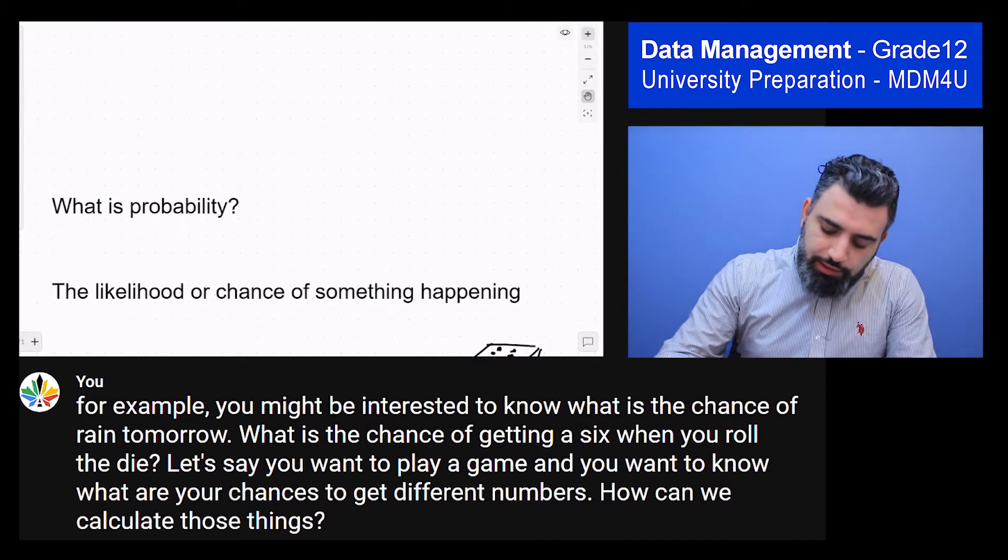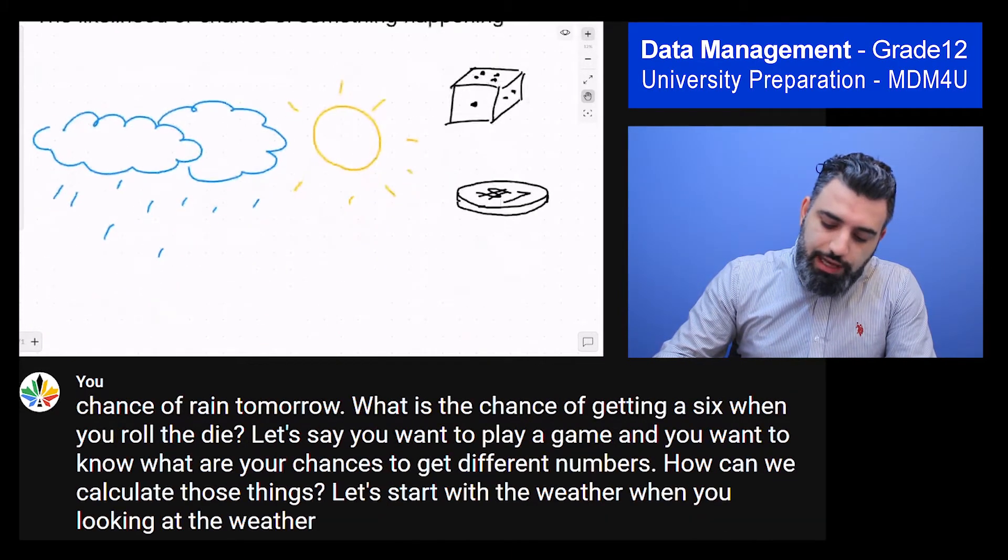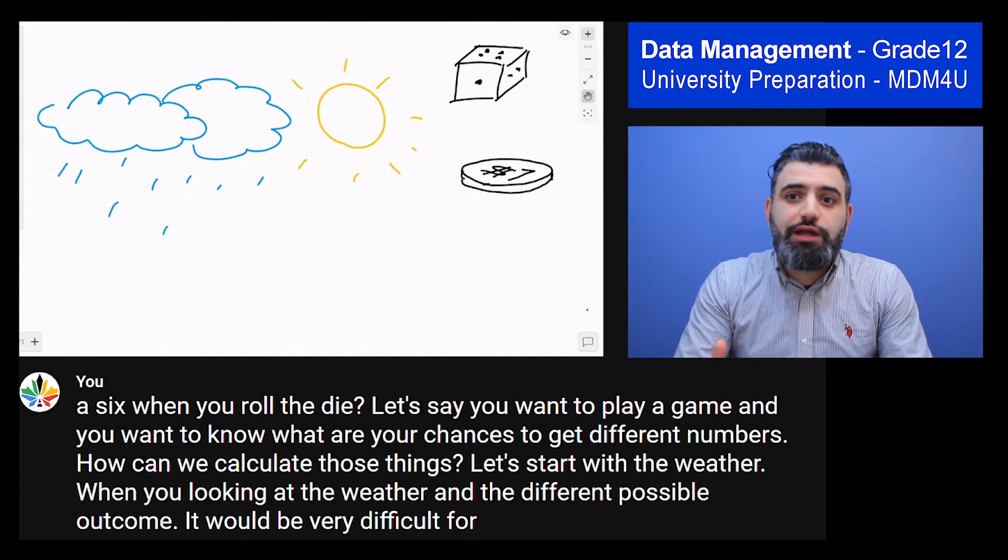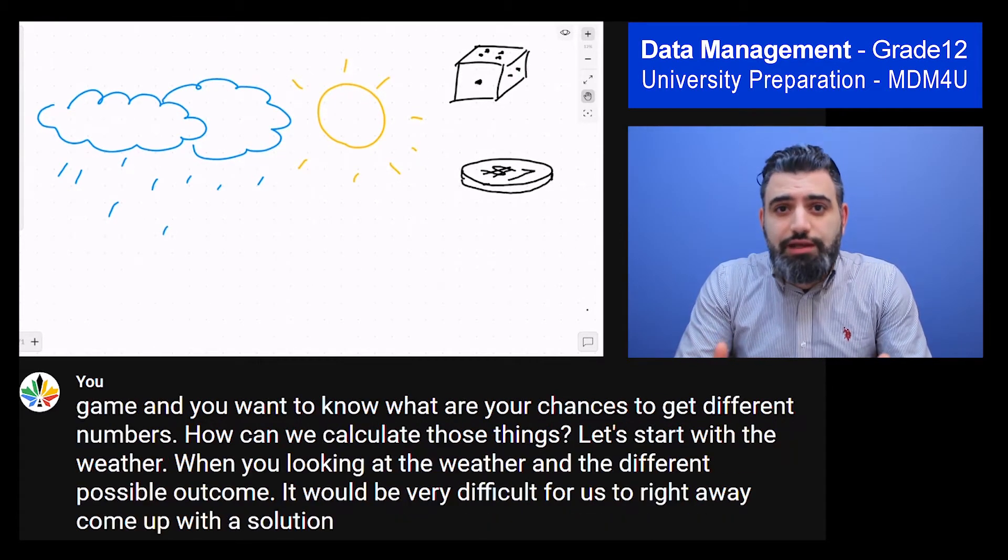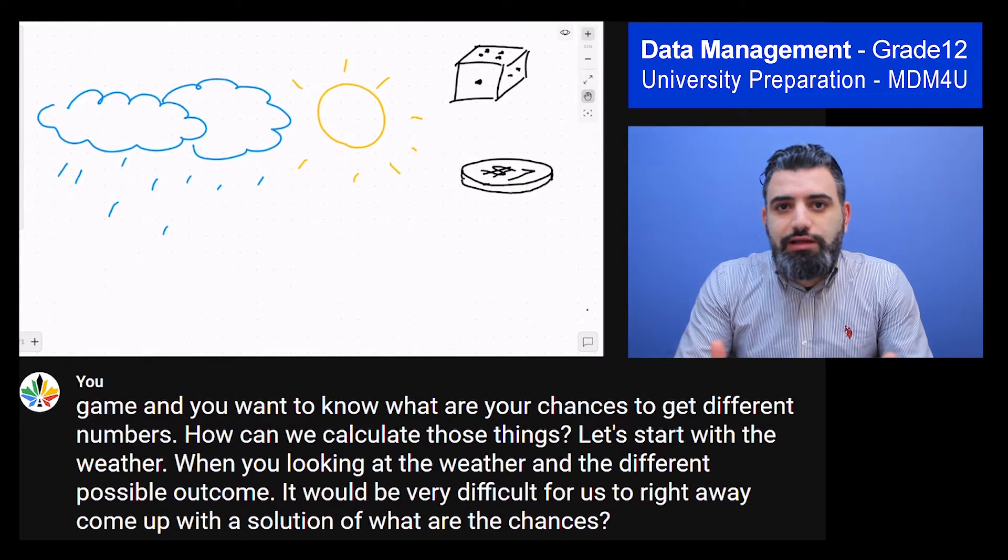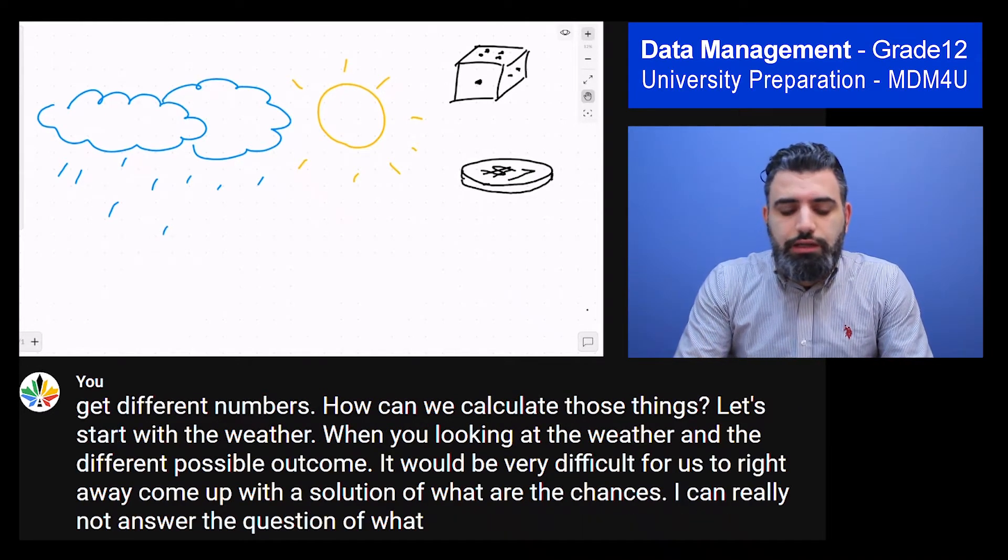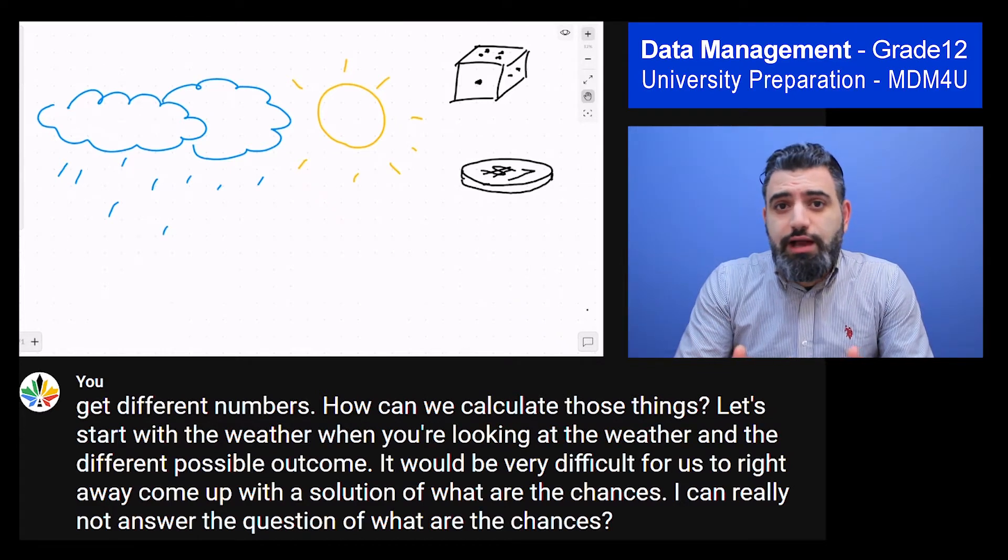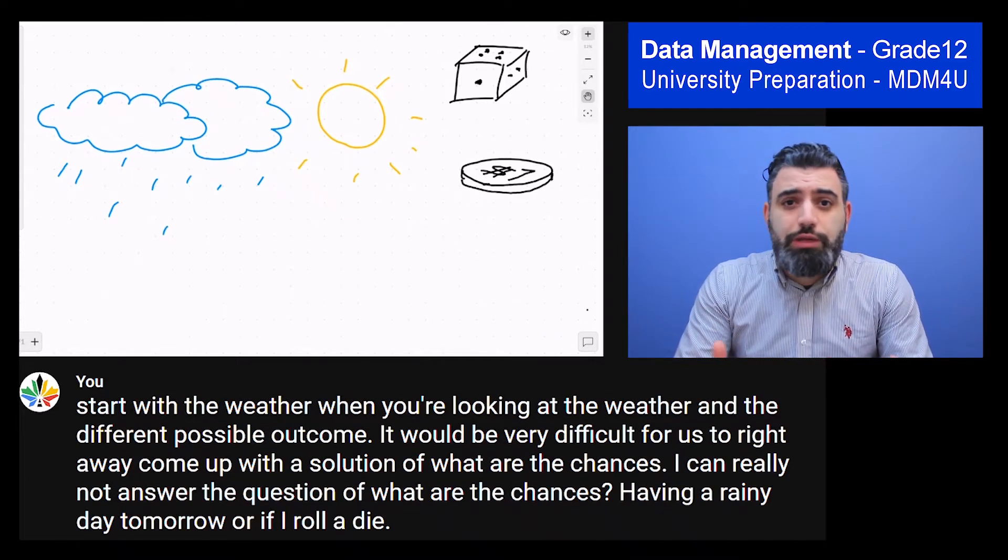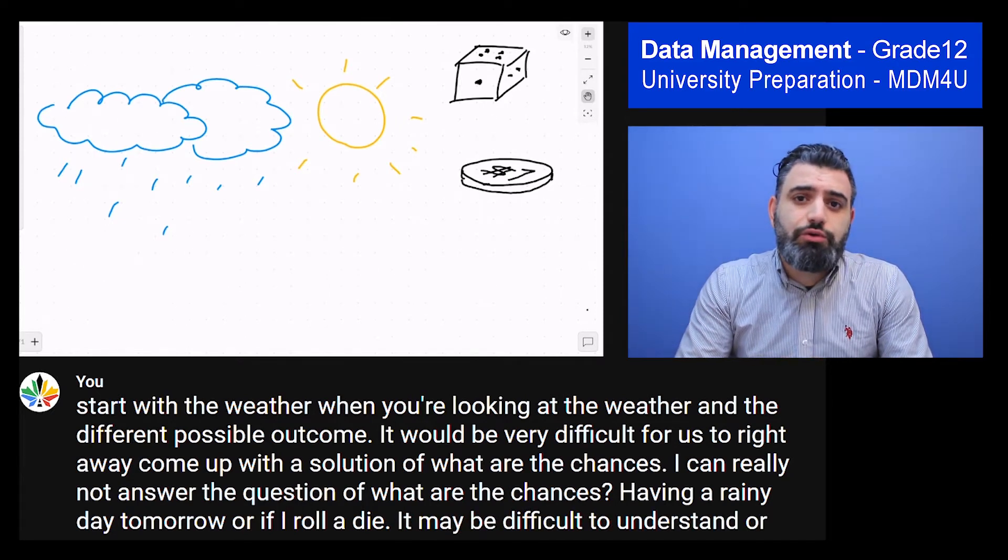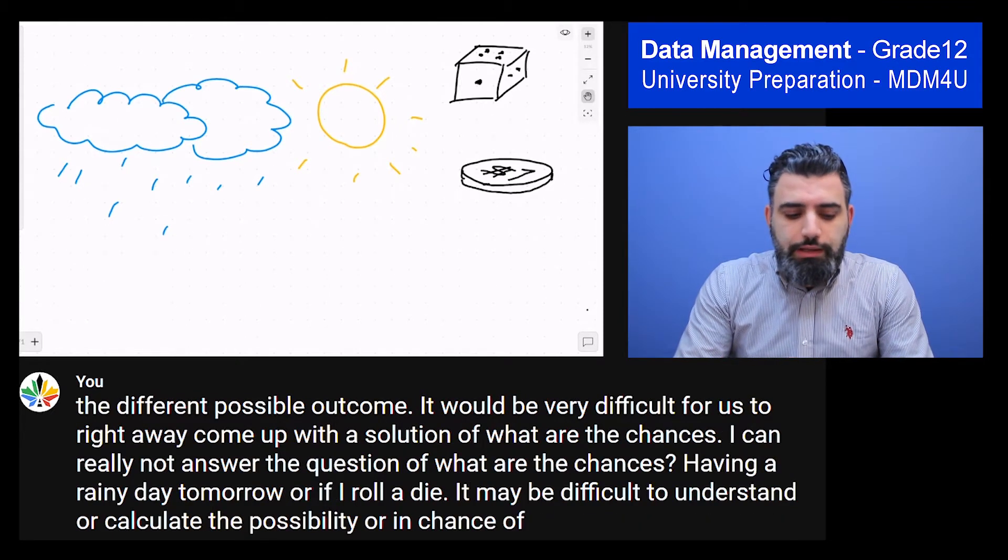Let's start with the weather. When you're looking at the weather and different possible outcomes, it would be very difficult for us to right away come up with a solution of what are the chances. I can really not answer the question of what is the chance of having a rainy day tomorrow. Or if I roll a die, it may be difficult to understand or calculate the possibility or your chance of getting a number.